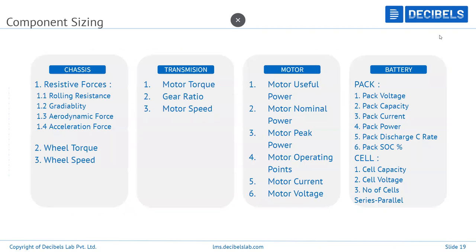In MBD for component sizing, you model the chassis — all resistive forces including rolling resistance, gradability, aerodynamic force, acceleration force, wheel torque, and wheel speed. In the transmission, you can determine motor torque and play with gear ratios to achieve desired output values. For example, if an XYZ company motor passes most parameters but the motor speed and torque are not in the required range, you come back to the model, work with gear ratios, try different iterations, and work it out — which directly informs your component procurement decisions.